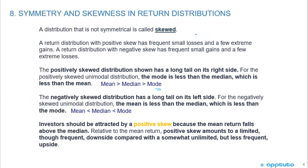Skewness: a distribution that is not symmetrical is called skewed. A return distribution with positive skew has frequent small losses and a few extreme gains. A return distribution with negative skew has frequent small gains and a few extreme losses. A positively skewed distribution has a long tail on its right-hand side. For a positively skewed unimodal distribution, the mode is less than the median, which is less than the mean — mean, median, mode.